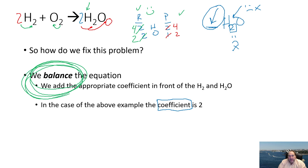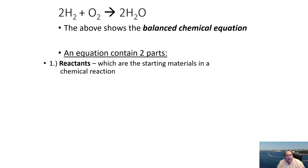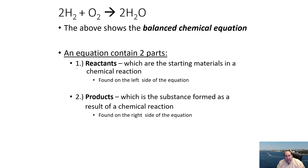Every single equation you ever use in chemistry should be balanced. If you see coefficients, it's probably balanced, but take a moment to check before continuing with your calculation. If an equation has no coefficients, look hard at it and double-check. Nothing works correctly if the equation is not balanced — so always make sure you have the right equation first, and then make sure it is balanced before you use it.